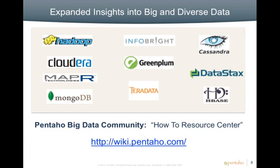As a leader in the big data ecosystem, Pentaho expands insights into new and diverse data. With 4.5, Pentaho open-sources all of its big data and NoSQL components, extends NoSQL database integration to include partners such as Apache Cassandra, DataStax, and MongoDB, improves performance and ease of use for Pentaho MapReduce, supports secure Hadoop clusters, and provides an extensive online how-to resource center at wiki.pentaho.com.